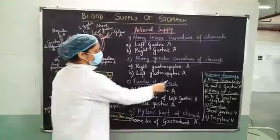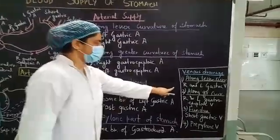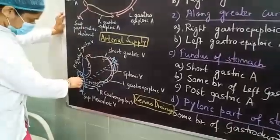Now let us discuss the venous drainage of stomach. Firstly, along the lesser curvature, it will be drained by the right and left gastric veins.